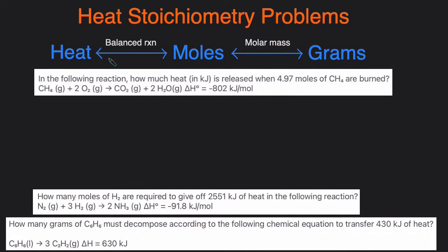I have the flow chart written right here and we have three example problems, so let's jump into it and work through these. The first question asks: in the following reaction, how much heat in kilojoules is released when 4.97 moles are burned? You're given the moles and you're also given the chemical reaction.